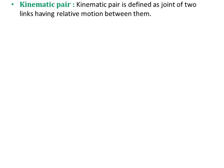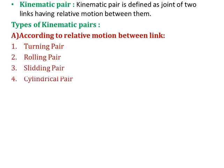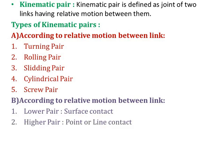Now we will see what is a kinematic pair. A kinematic pair is defined as a joint of two links having relative motion between them. The types of kinematic pairs according to relative motion are: turning pair, rolling pair, sliding pair, cylindrical pair, and screw pair. According to the nature of contact: lower pair (surface contact) and higher pair (point or line contact).